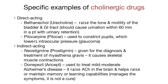Indirect acting cholinergic drugs include neostigmine, or prostigmine, which is given for the diagnosis and treatment of myasthenia gravis and causes skeletal muscle contractions. Also, donepezil, or Aricept, is used to treat mild to moderate Alzheimer's disease. It increases acetylcholine in the brain and helps increase or maintain memory and learning capabilities. It manages the symptoms but is not a cure.